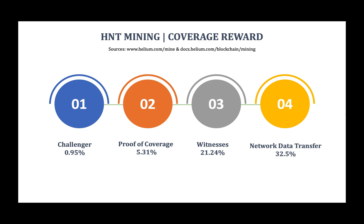The next category is Proof of Coverage: 5.31% of the total available HNT is awarded to hotspots that respond to challenge requests. The challenger sends a challenge out, the hotspot responds and transmits the proof-of-coverage packets sent by the challenger, and gets rewarded for doing so. In simple terms, a challenger says hello to a group of hotspots anywhere in the world, and those hotspots respond and transmit data to witnesses they can see locally.